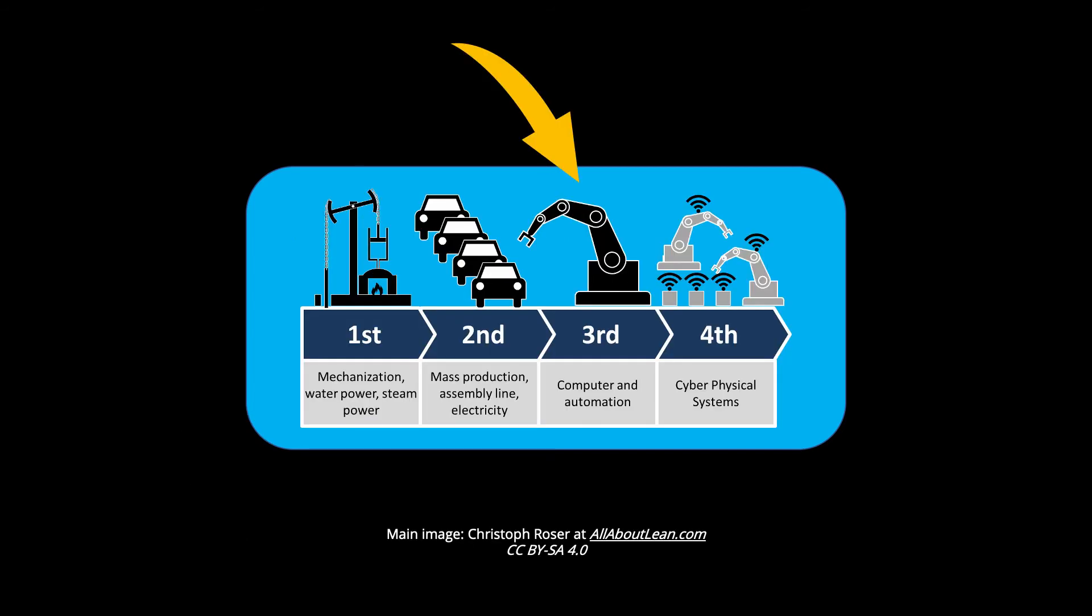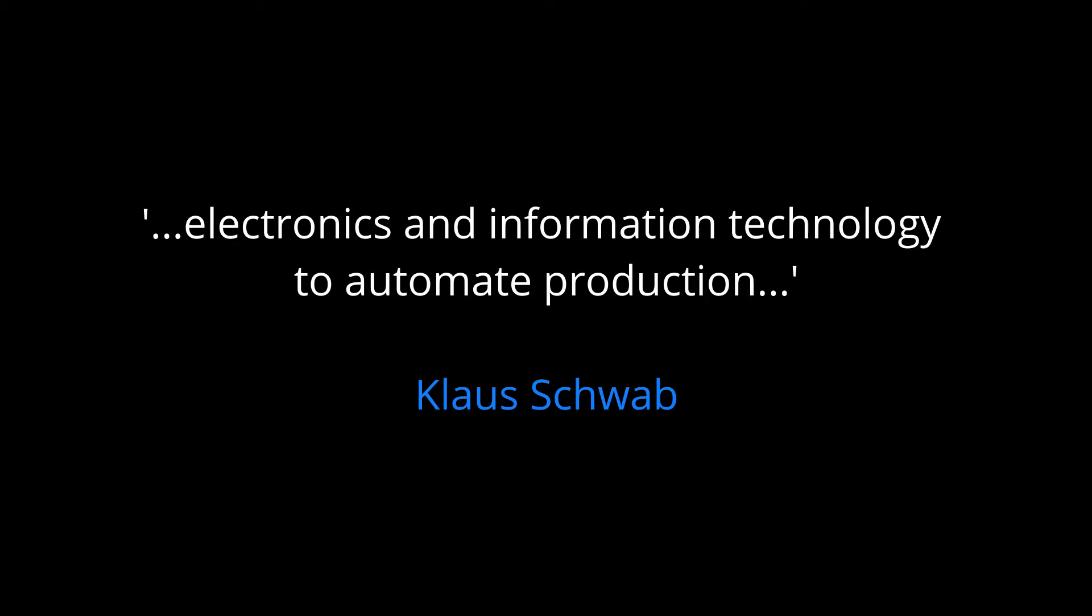Since then, we have lived through the third revolution which began in the 1960s and used, in the words of the executive chairman of the World Economic Forum, Klaus Schwab, writing in 2016, electronics and information technology to automate production. Hence why the third revolution is sometimes called the digital revolution.